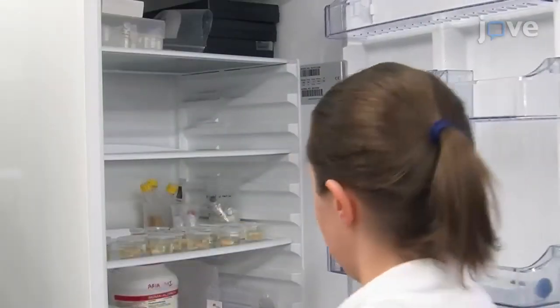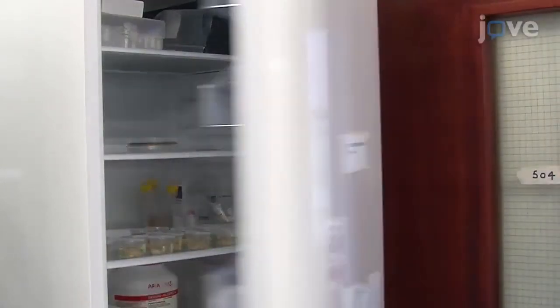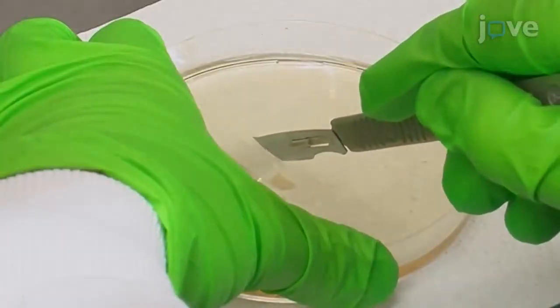Then, move the dish of setting gelatin to 4 degrees Celsius for 30 to 60 minutes. In a fume hood, use a scalpel blade to cut off.